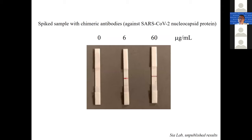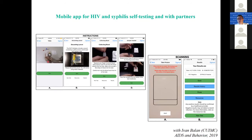The bottom line is: when you do a blood draw and send it back to a lab for antibody tests, those are still very accurate. Pregnancy-strip style rapid tests are becoming validated and will probably be available at some point even to consumers. We're making these rapid antibody tests in our lab, and we're also developing a paired mobile app that will help consumers run the test properly — it has a scanning algorithm so you can scan the rapid test image and get an interpretation of the result.